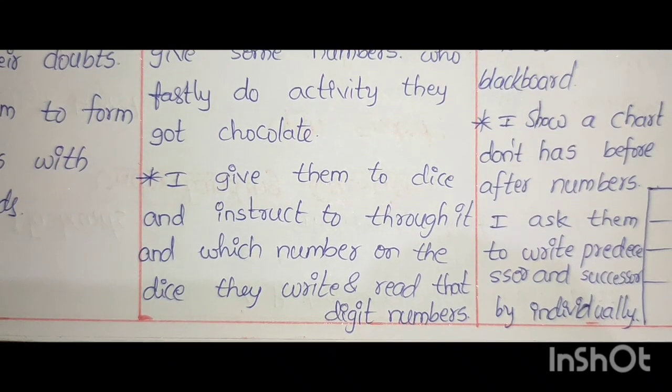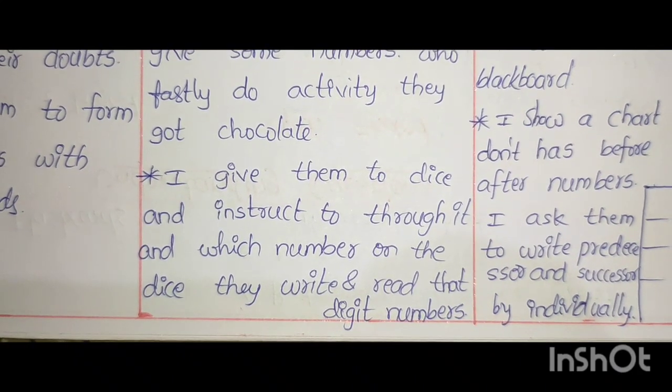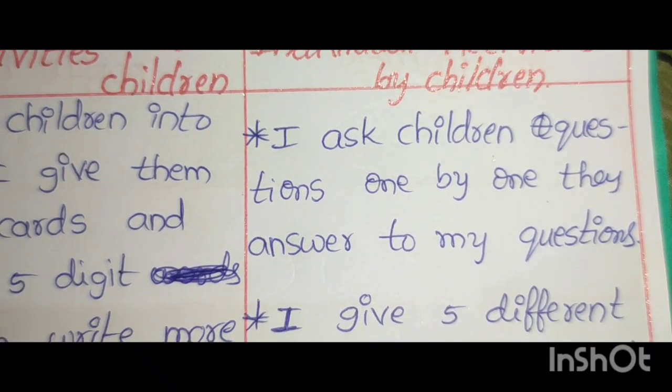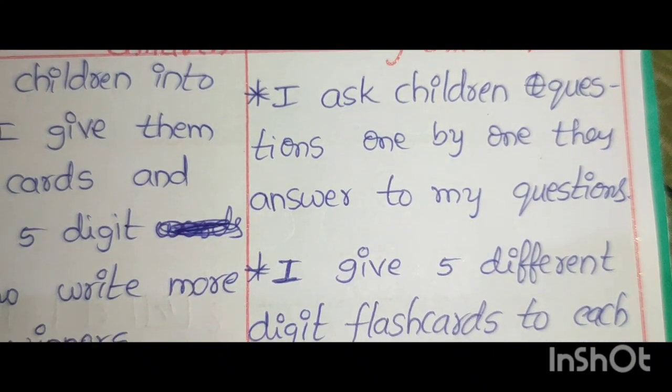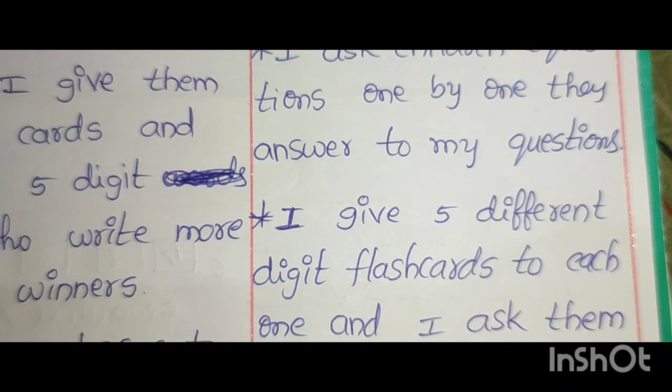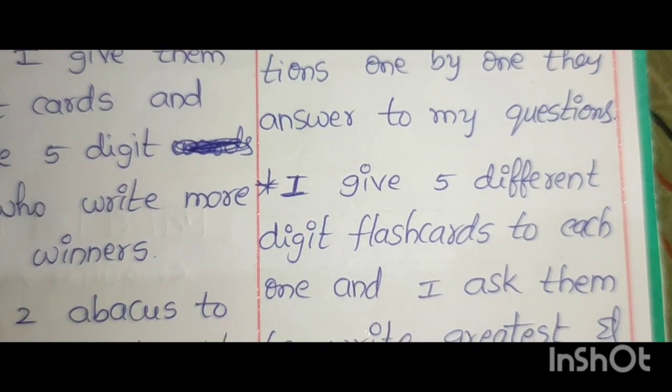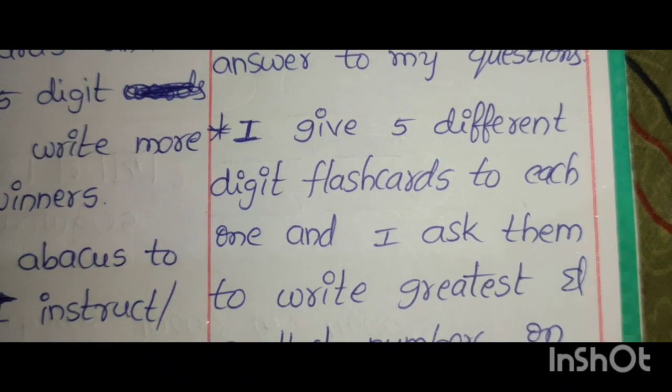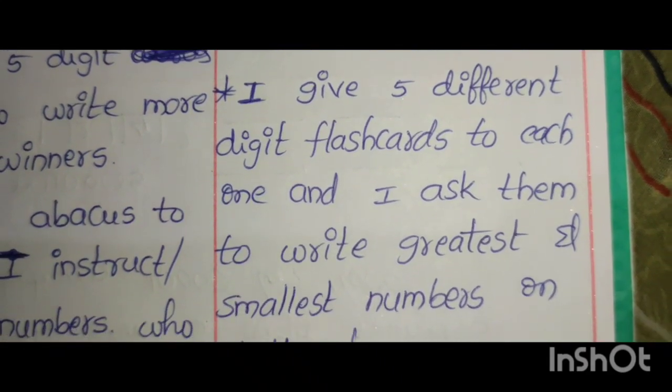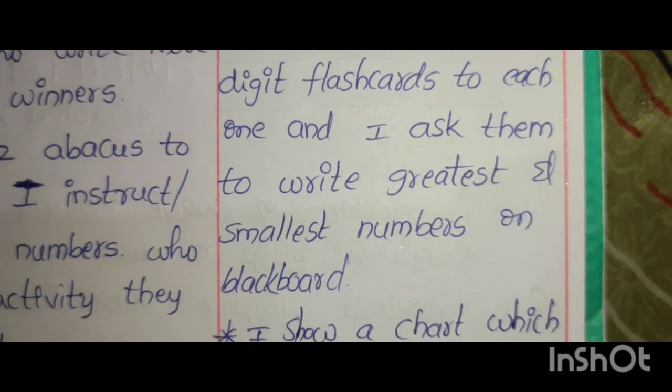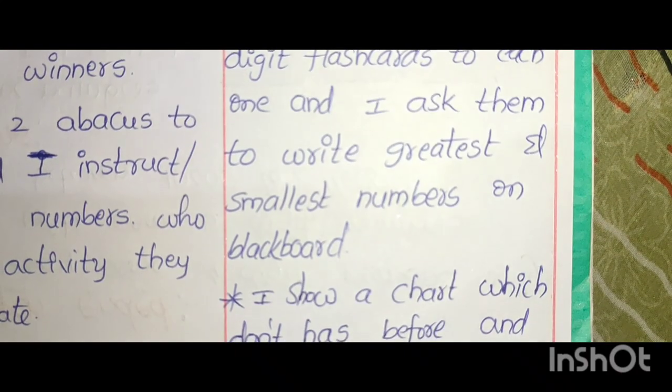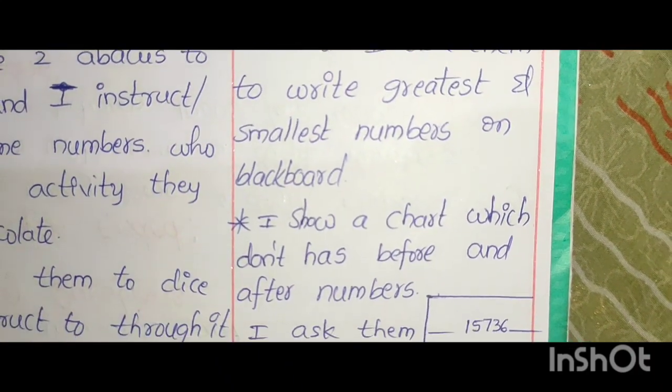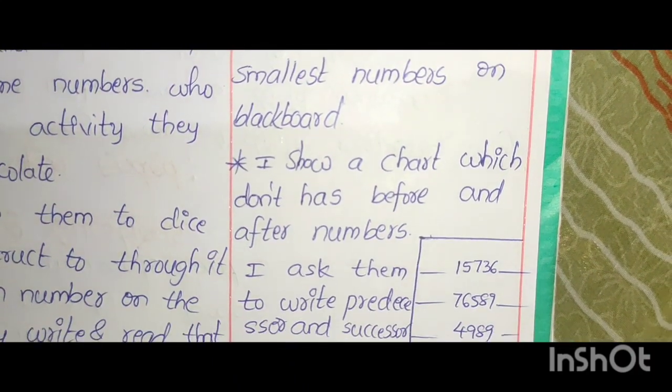Individual activities by children: I ask children questions one by one. They answer to my questions. I give 5 different digit flashcards to each one and I ask them to write greatest and smallest numbers on blackboard. I show a chart which doesn't have before and after numbers. I ask them to write predecessor and successor.